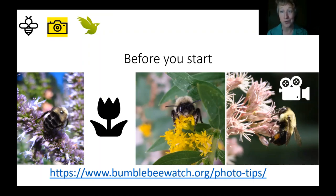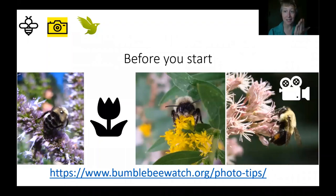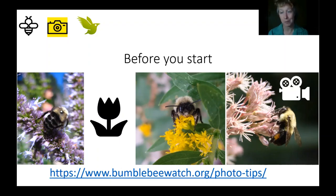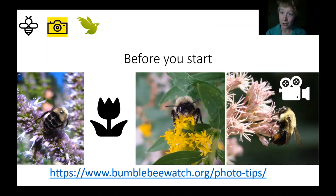It's important to get close up. You can use the macro setting on your cameras. It's important to show some different angles — for species identification, we sometimes need to see a direct front view of the face, the side of the bee, and the back. One way to get those multiple angles is to take a video and then isolate stills from that video. More details on these photo tips can be found at bumblebeewatch.org, which is another great project for helping share data about bumblebees, so I encourage you to participate in bumblebeewatch also.